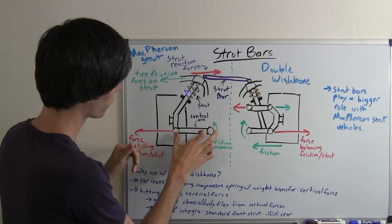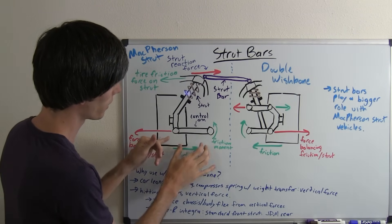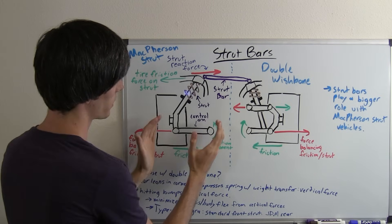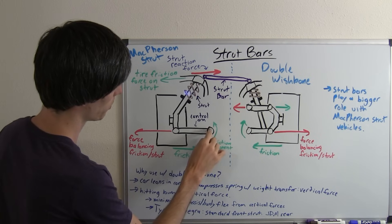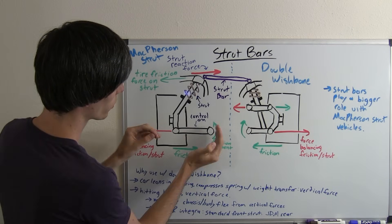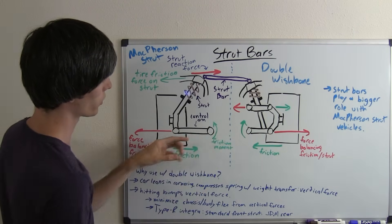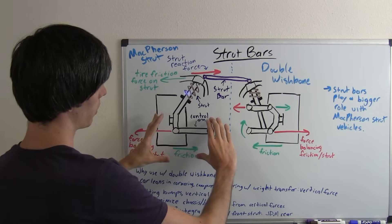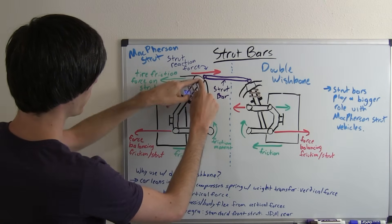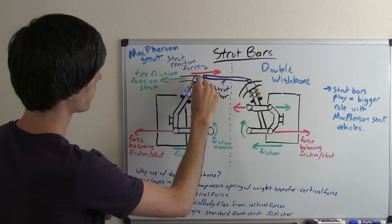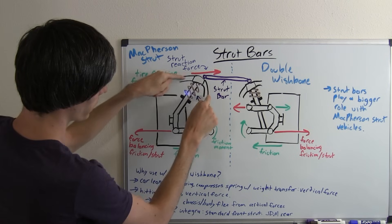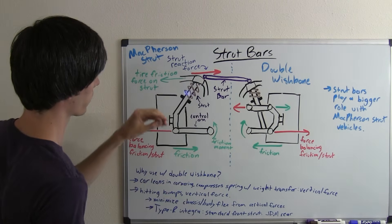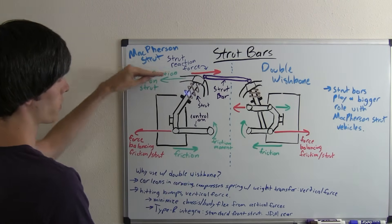That friction force, we've got our lower control arm and the friction force is going to want to rotate this tire down towards the ground about this point of your lower control arm. It's going to create a moment about this control arm and it's going to be pulling on that upper strut where that strut connects with the body of the car. This right here is the body of the car and this is where your strut connects.